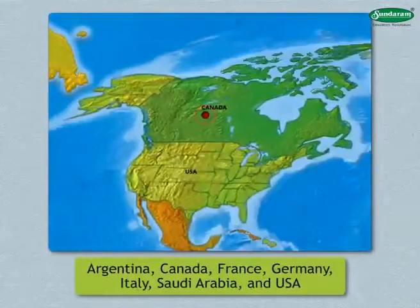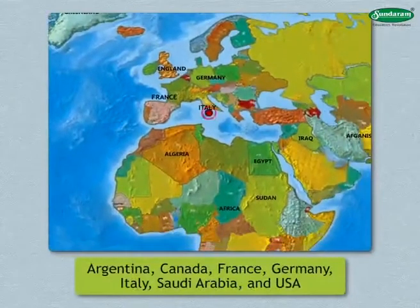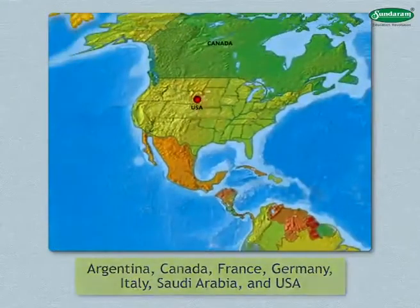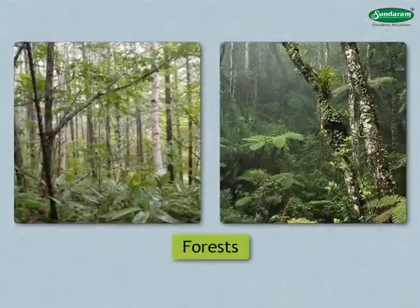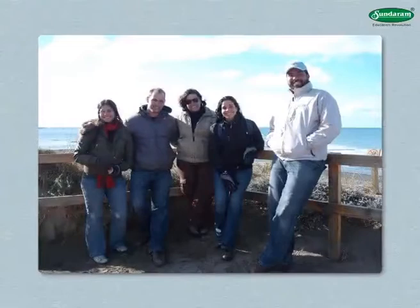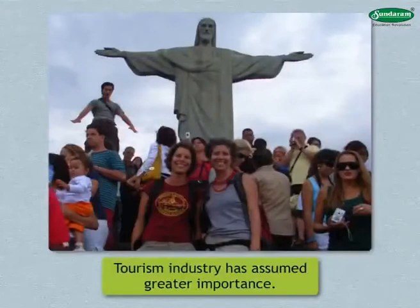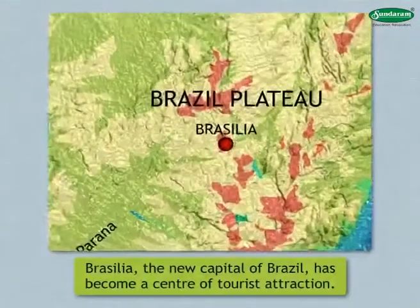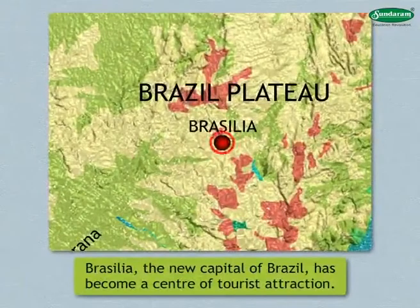Argentina, Canada, France, Germany, Italy, Saudi Arabia, and the USA are the major trading partners of Brazil. Tourist attractions include the coast with clean white sand, different islands with high scenic beauty, fruit plantations, Amazon Basin forests, and a variety of birds. Tourists visit this country in large numbers every year, and Brasilia, the new capital, has also become a center of tourist attraction.